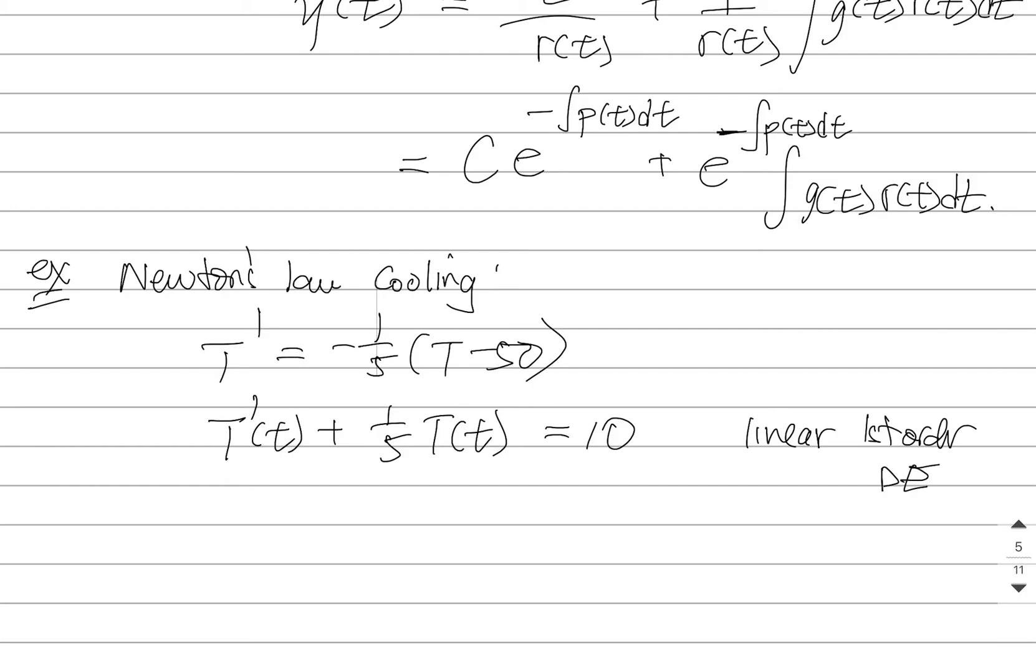This thing right here is P(t). So that means this function r(t), we're going to give this a fancy name. We're going to call it the integrating factor. So this is going to be e to the antiderivative P(t)dt. So this is going to be e to the antiderivative of 1/5 dt.